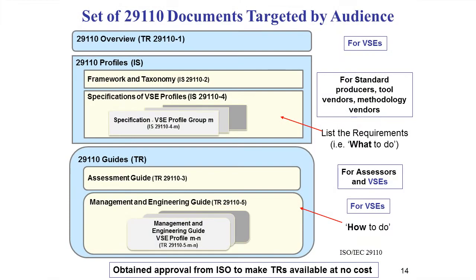We have developed a set of five documents targeted by audience. Three of those documents are technical reports and are available at no cost from the ISO website, or on my website you will find the hyperlink to those three documents. I suggest a VSE start with part one, which is the overview — it describes the concept of the standards developed especially for them. The most important document for the VSE is the Engineering and Management Guide, which is called part five.